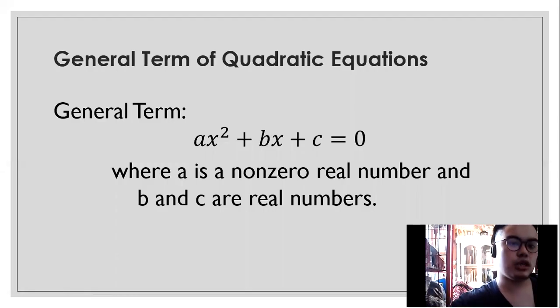So here is the general term of the quadratic equations. We read it as ax squared plus bx plus c is equal to zero. Your a is the coefficient of the x squared while your b is the coefficient of x then your c is a constant. When we say constant, it is a number that has no literal coefficient. To classify a, b, and c, they're all real numbers.